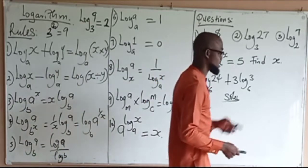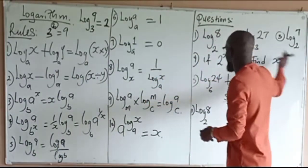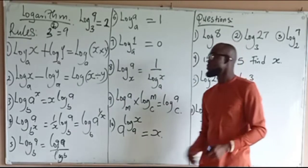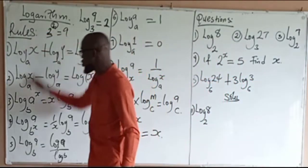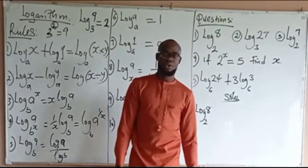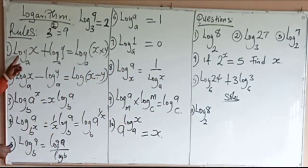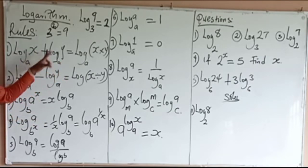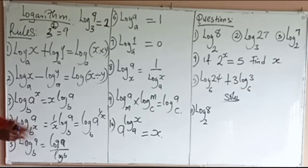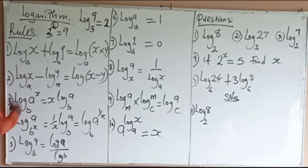Now we can also get the answer from the rules used in logarithms. Let me explain them one after the other. The first rule is: log X plus log Y, where all the bases are the same, equals log of X times Y. For example, log 3 plus log 2 equals log of 3 times 2. That is the first and most important rule.